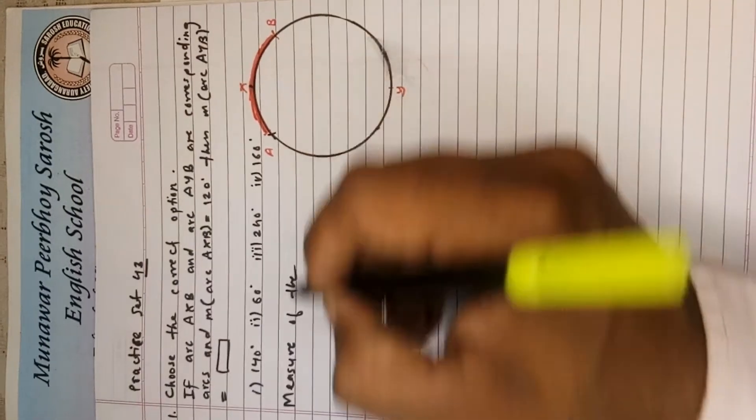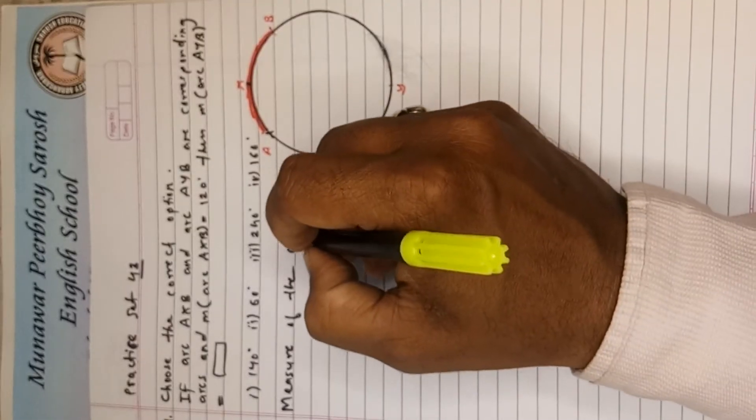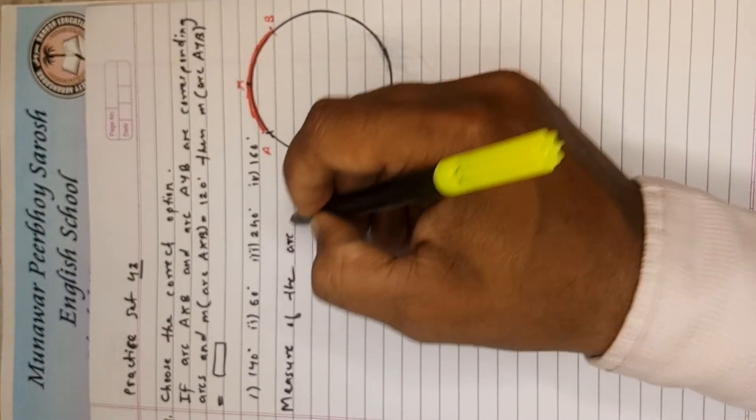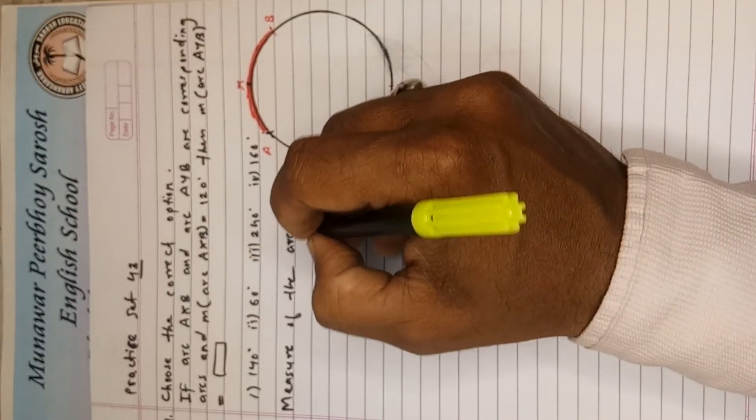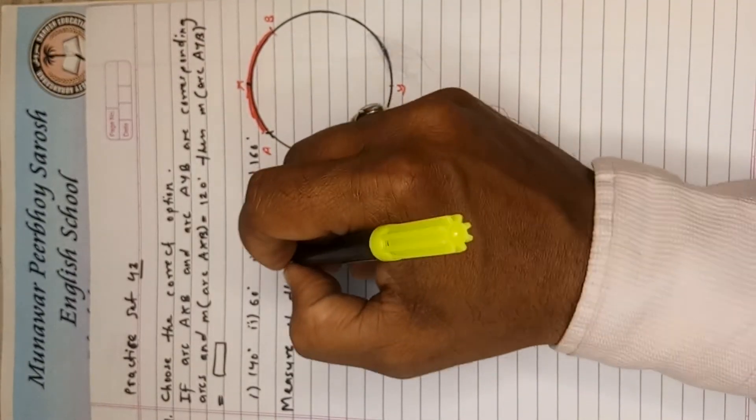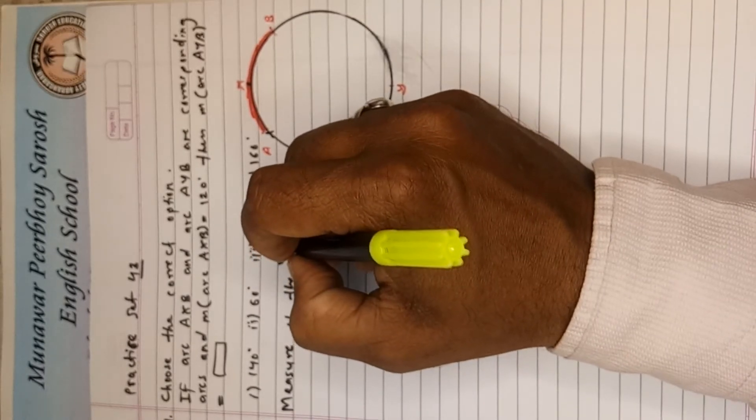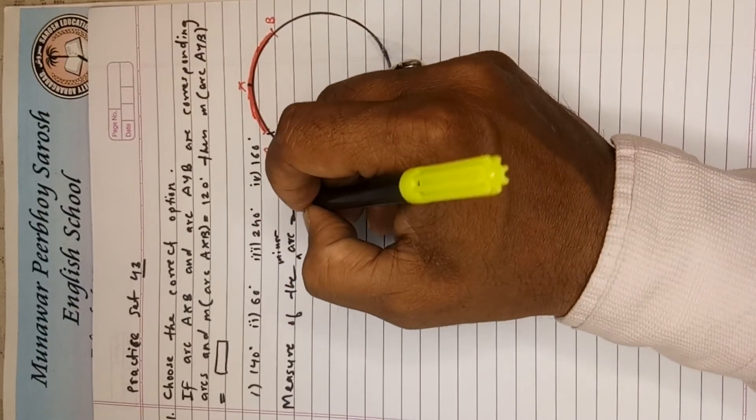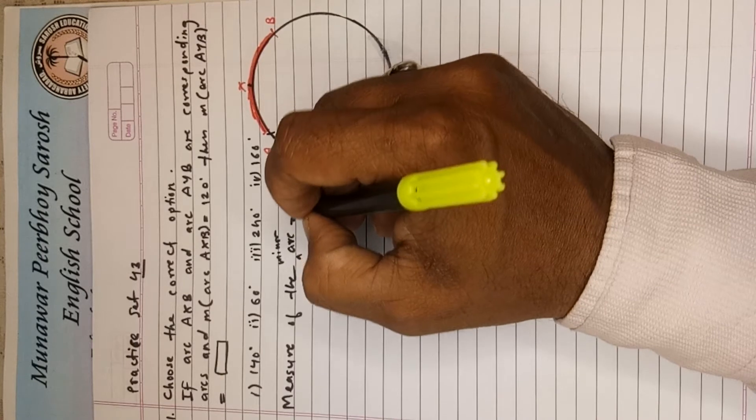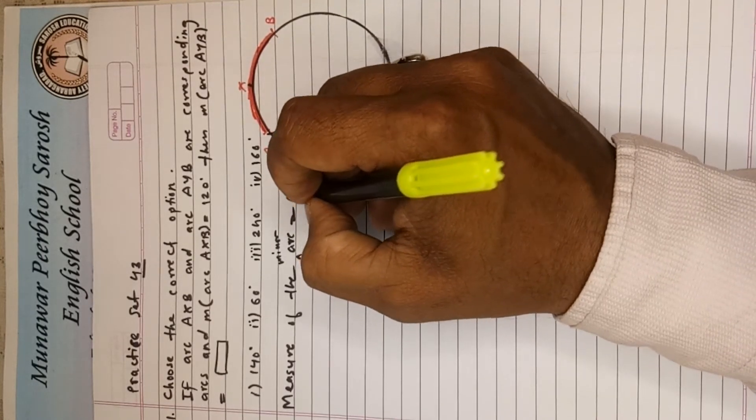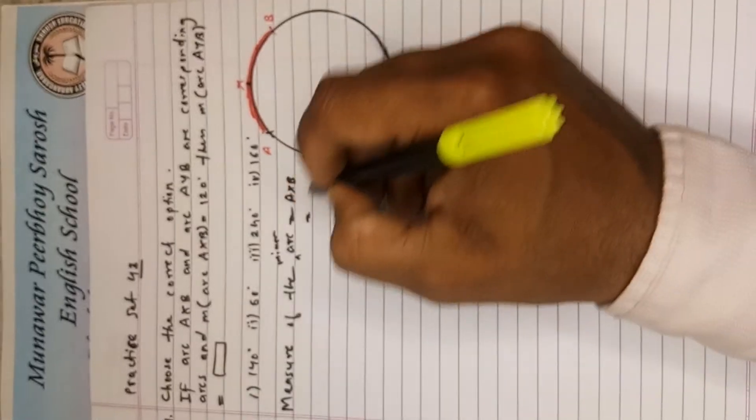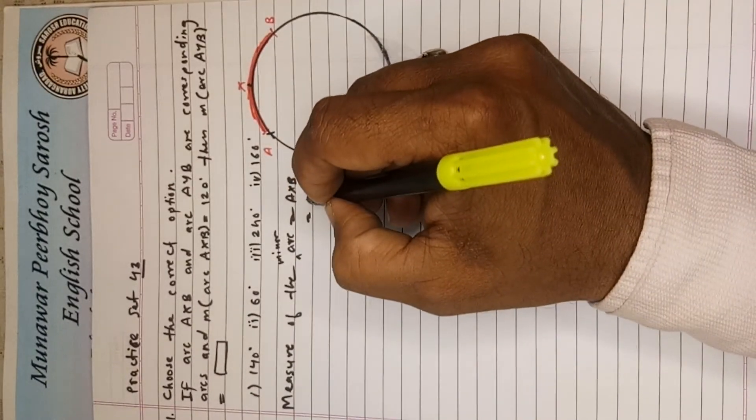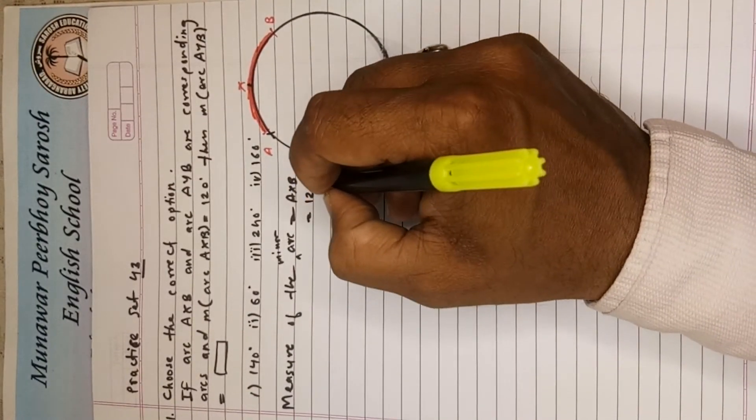Major of the arc AXB. You may say measure of the minor arc, yeah, as it is small. Measure of the minor arc AXB is equals to 120 degree.